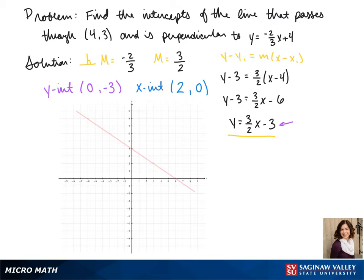So here we see the graph of the line that it's perpendicular to. To find our line, we can plot our intercepts and use our slope to find a couple more points, then connect those points.